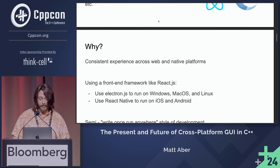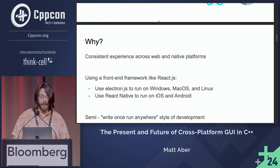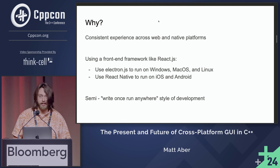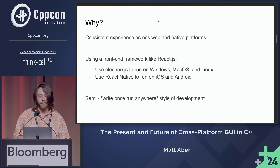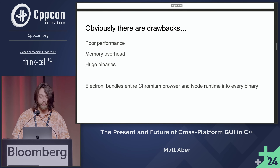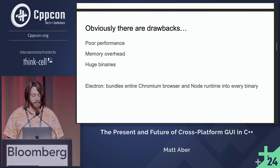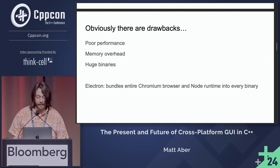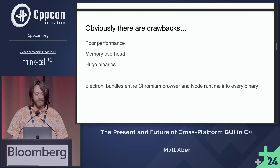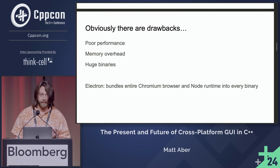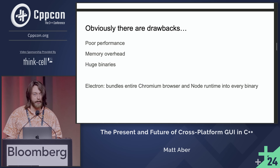Why is this? Well, people want consistency between web clients and desktop clients. But it's sort of awful because the performance is terrible, there's a tremendous memory overhead, the binaries are enormous, and you're actually — in the case of Electron — bundling an entire distribution of Chromium and an entire distribution of Node.js with every binary.